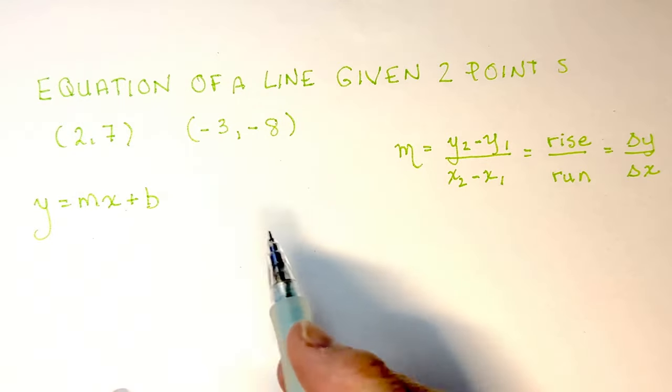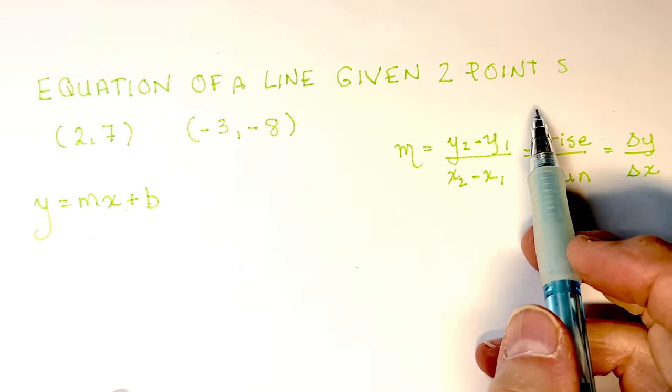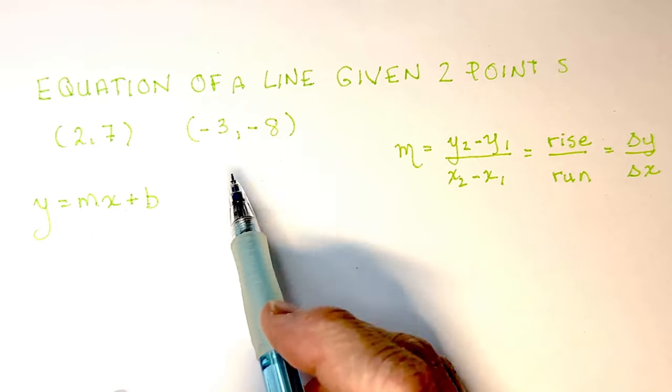In this chart, I'm going to show you how to find the equation of a line given two points. So let's say we have the points (2, 7) and (-3, -8).